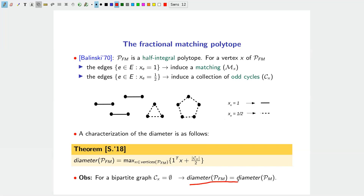For general graphs, having many odd cycles in the support makes the diameter larger. The proof uses the adjacency structure of the fractional matching polytope and is not straightforward — I will skip it for this plenary talk. But once this characterization is established, the hardness results follow quite easily.